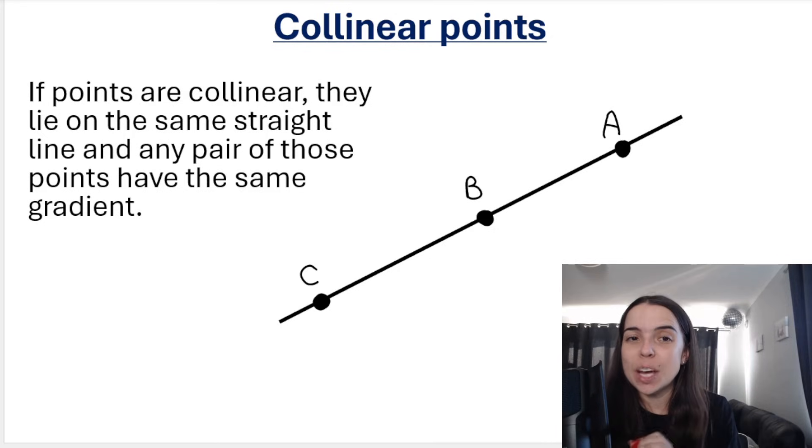Let's take a quick look at collinear points. If points are collinear, so if I say A, B, and C are collinear, that means those three points lie on the same straight line and any pair of those points will have the same gradient as any other pair.